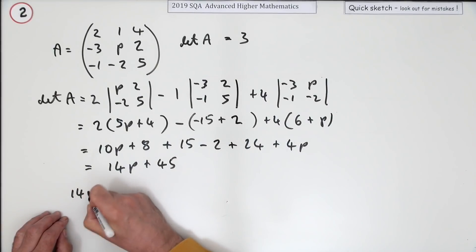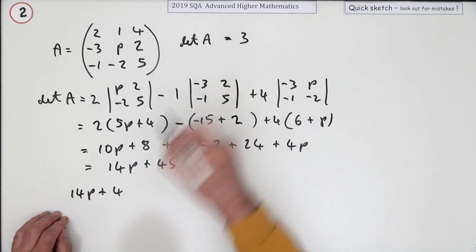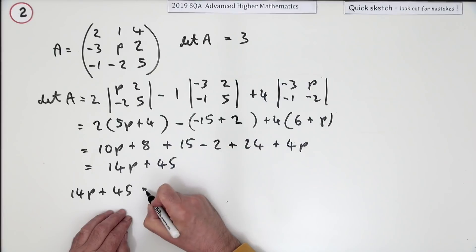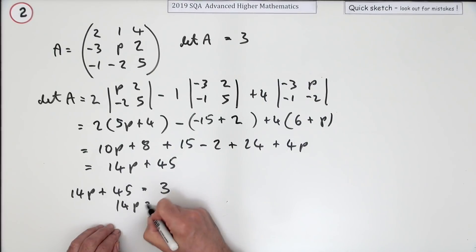I'll just put it down. 14P plus an awful lot here for three marks. 14P plus 45 equals 3, so 14P is going to be negative. That'll be negative 42, but that's okay because that does go in. That's three times it. So P is negative 3.